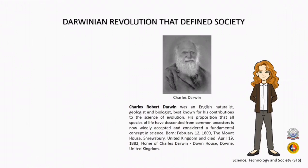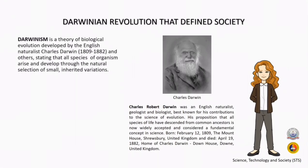Darwin was born February 12, 1809, at The Mount House, Shrewsbury, United Kingdom, and died April 19, 1882. His home was Down House, Down, United Kingdom.